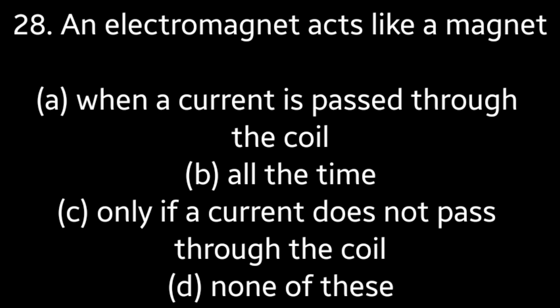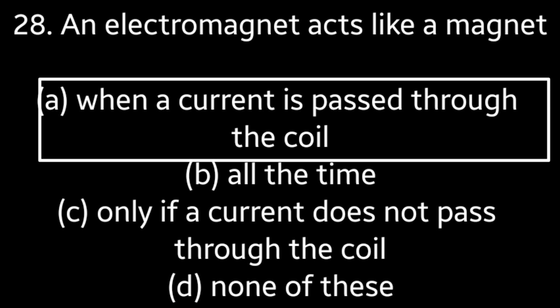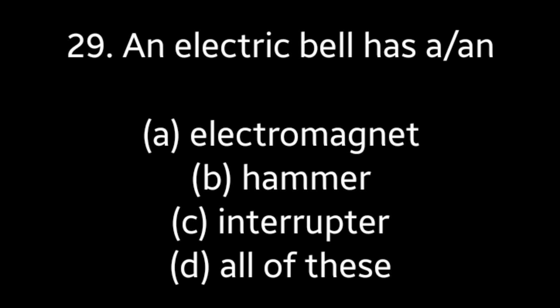Question No. 28: An electromagnet acts like a magnet — When a current is passed through the coil, All the time, Only if a current does not pass through the coil, None of these. Answer is Option A: When a current is passed through the coil.